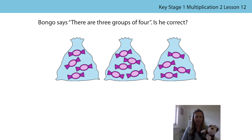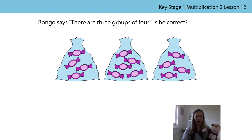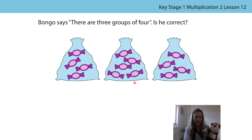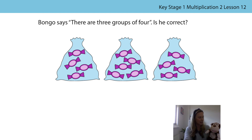Bongo's got some sweets and he wants to share them with his friends — what a kind thing to do, Bongo. He says that there are three groups of four. Is he correct? We can see that Bongo has got three groups, but how many sweets are in each group? We've got four sweets in one group, five sweets in another group, and four in the last group. So what's wrong? The groups are not equal, so we're not going to be able to write a multiplication expression to represent this picture.